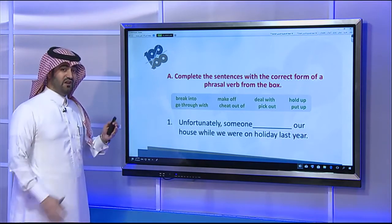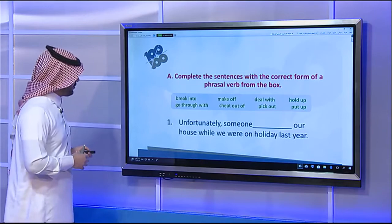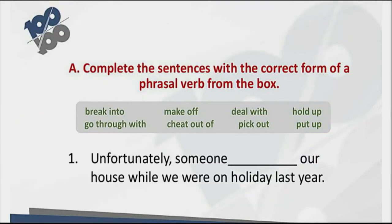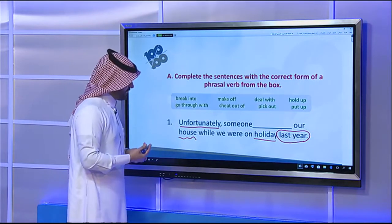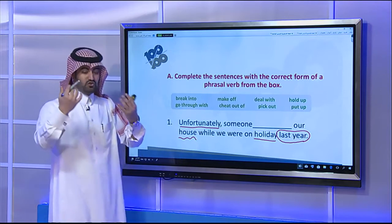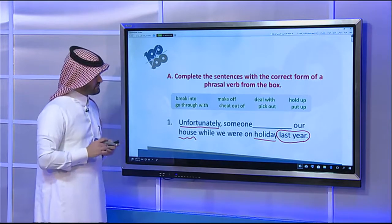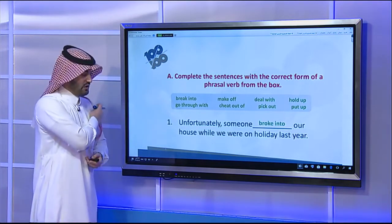Now let's do the exercise. Sentence one: 'Unfortunately, someone ___ our house while we were on holiday last year.' We see 'unfortunately' — something bad happened. The action is in the past. Someone entered our house by force to steal, so the answer is 'break into', changed to the past: someone broke into our house.